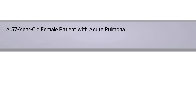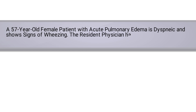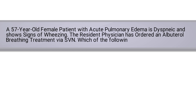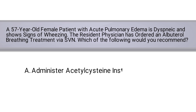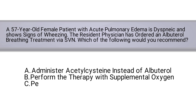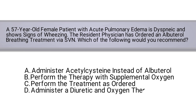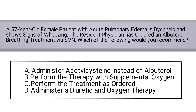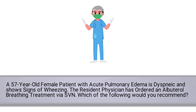A 57-year-old female patient with acute pulmonary edema is dyspneic and showing signs of wheezing. The resident physician has ordered an albuterol breathing treatment via SVN. Which of the following would you recommend? A) Administer acetylcysteine instead of albuterol. B) Perform the therapy with supplemental oxygen. C) Perform the treatment as ordered. Or D) Administer a diuretic and oxygen therapy. Do you know the answer? Let's break it down.